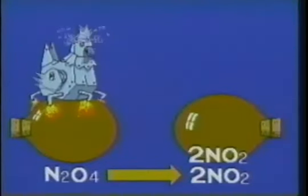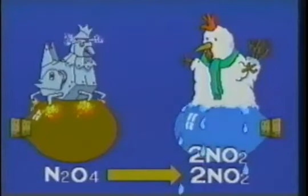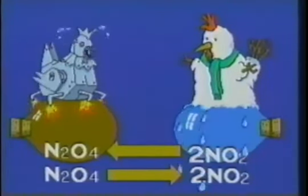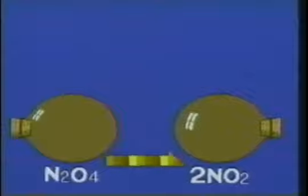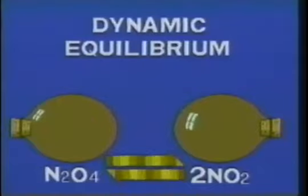As colorless dinitrogen tetroxide is warmed, it begins to dissociate into reddish-brown nitrogen dioxide. And if nitrogen dioxide is cooled, it reacts to form colorless dinitrogen tetroxide. Left alone to reach the same temperature and pressure, the reaction appears to stop with a mixture of both nitrogen dioxide and dinitrogen tetroxide in each flask. But chemists would like us to believe that the reaction has not stopped — instead, millions of reactions operate in one direction to balance out millions operating in the other. A condition they call dynamic equilibrium.